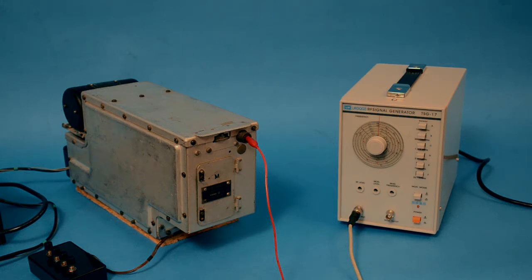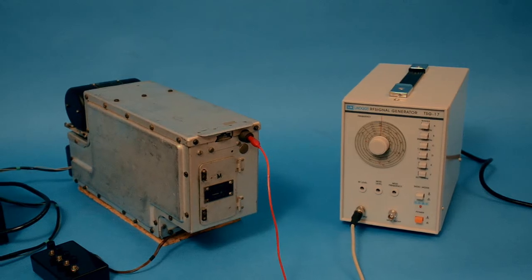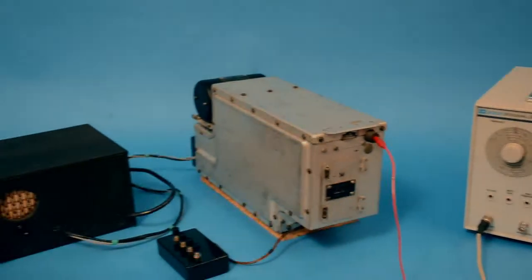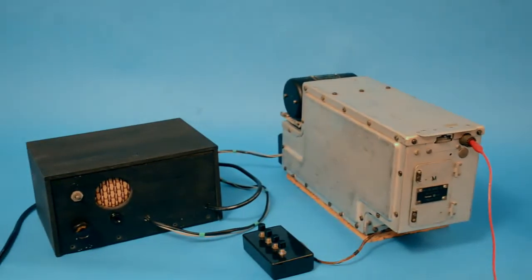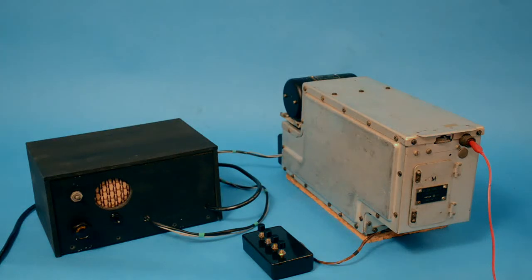The power supply we're using is simply used to provide the unit with the required 28V DC to drive the valve heaters, the dynamo motor and the motorised section of the channel changer.